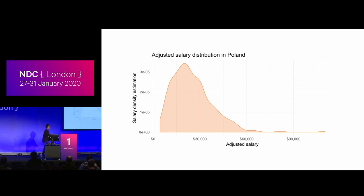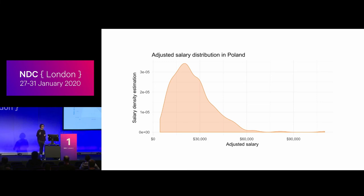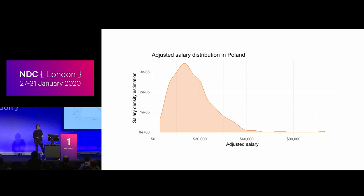I validated it in Poland, confirmed with Polish friends, and in Germany as well. The Stack Overflow data team just took it at face value. To their credit, when I highlighted it they changed the format of the question — now they ask for a number and you pick whether it's monthly, weekly, or annual. But I only caught this error by looking at the data carefully and thinking something was wrong. Other people hadn't noticed, so there might be other things going completely wrong in there as well.